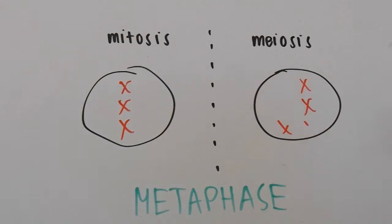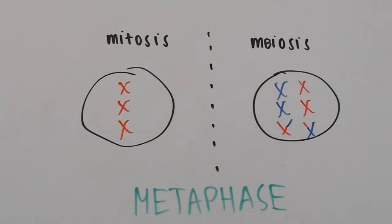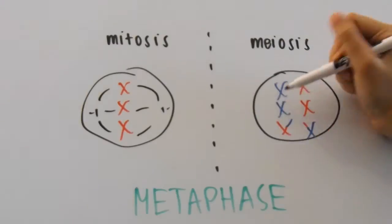At metaphase, the sister chromatids line up at the metaphase plate in mitosis. In meiosis, we can see that the tetrads are lining up.